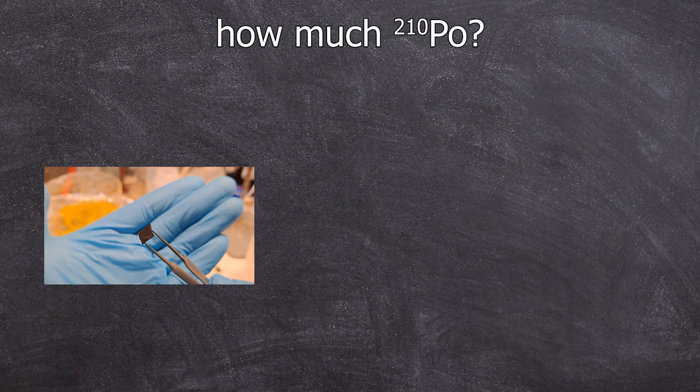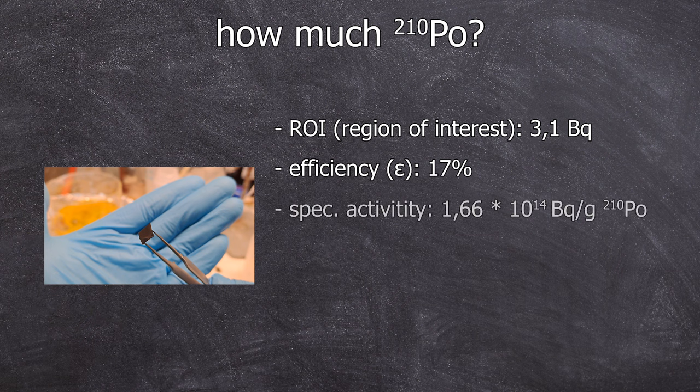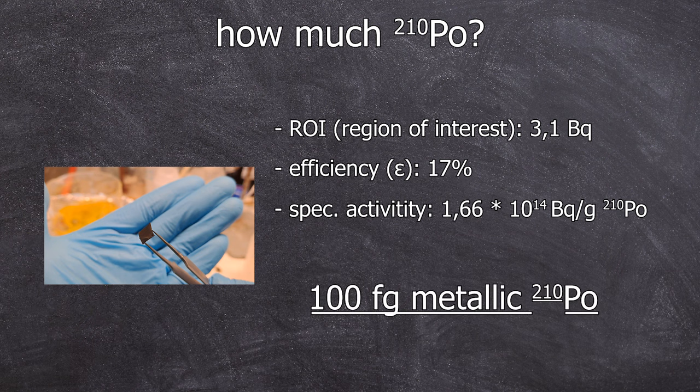How much polonium do we actually have? Based on the region of interest and the detector efficiency, it can be calculated that there were actually 18 becquerels of polonium. This result alongside the specific activity of 166 terabecquerels per gram for polonium-210 results in a deposited mass of 100 femtograms of polonium-210.